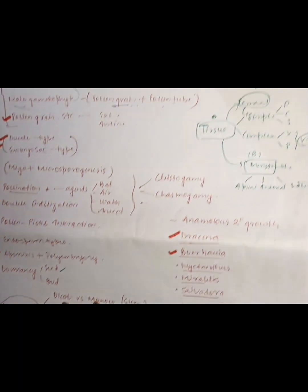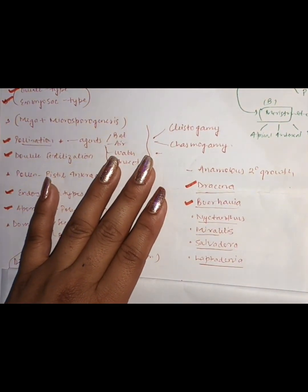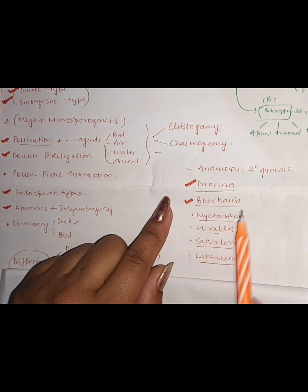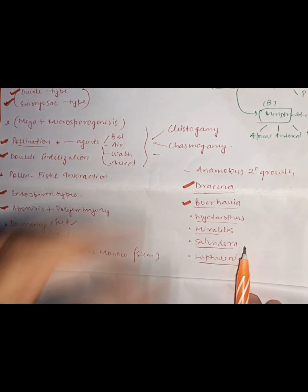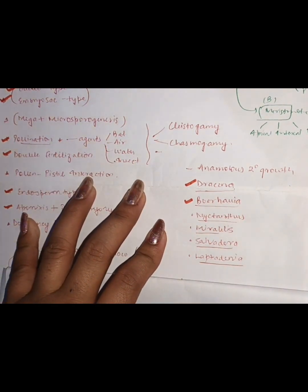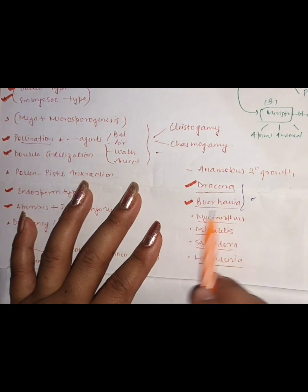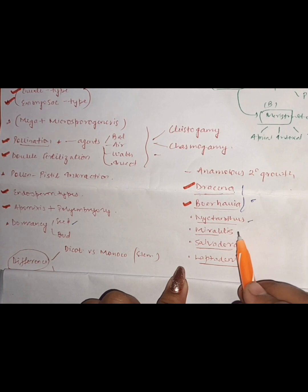Next, we have anomalous secondary growth. Secondary growth is often asked according to the syllabus. The topics include Dracaena, Boerhavia, Nyctanthes, Mirabilis, Salvadora, and Leptadenia. The most important ones are Dracaena and Boerhavia for practical purposes. Try to prioritize Dracaena and Boerhavia, and if you have time, you can also cover Nyctanthes and Mirabilis.